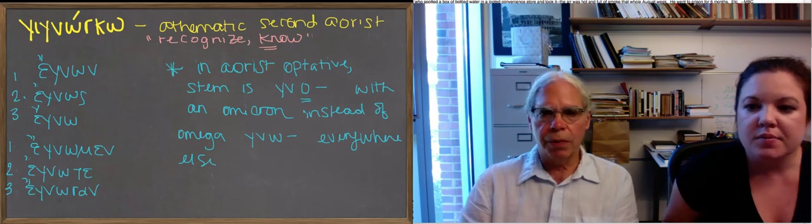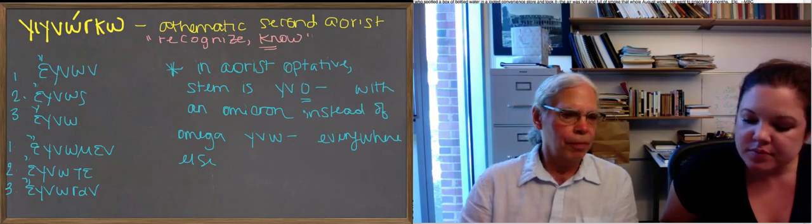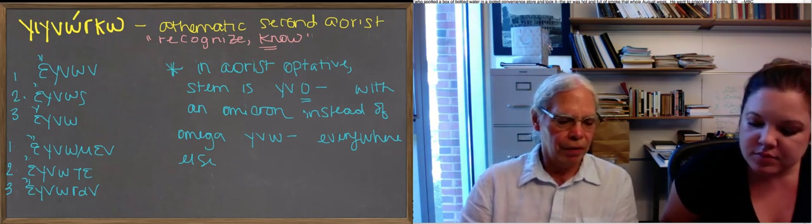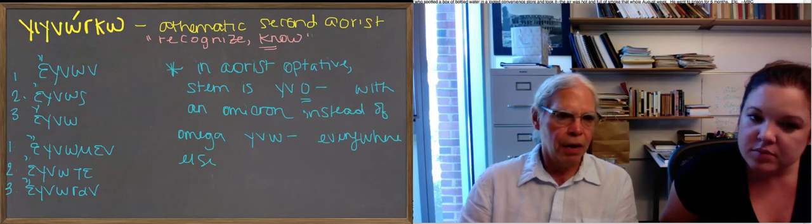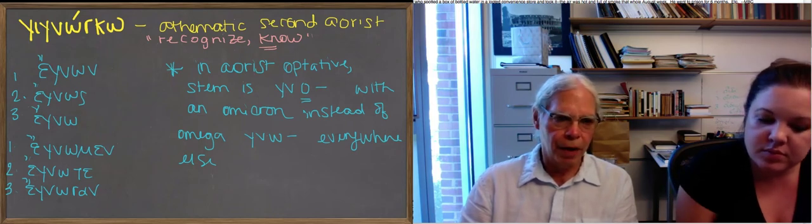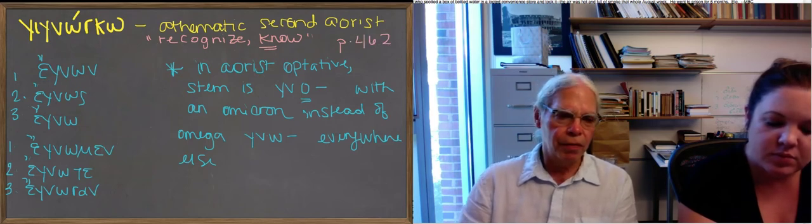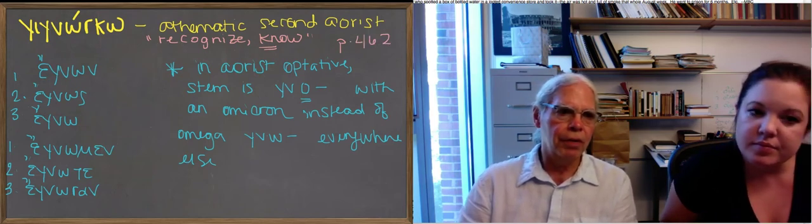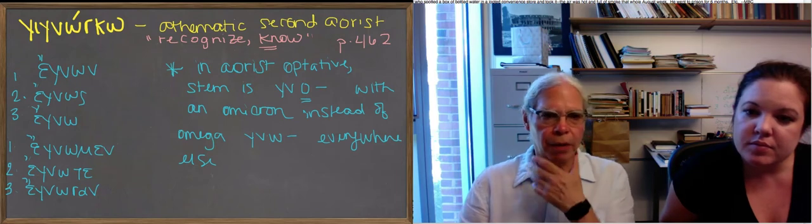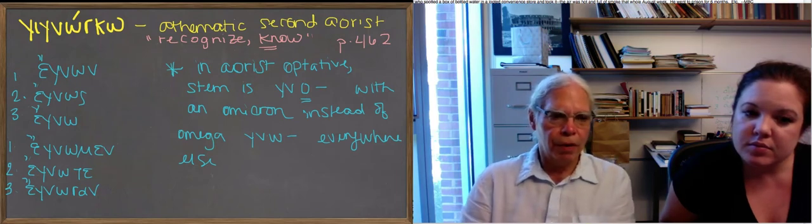So the forms of this verb are pretty much predictable, if you learn its principal parts, except for one form, that is the aorist. And we've given you the aorist indicative form on the blackboard. You can see that what's going on with it